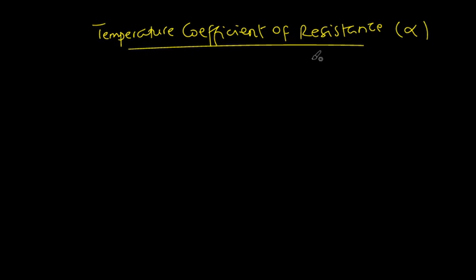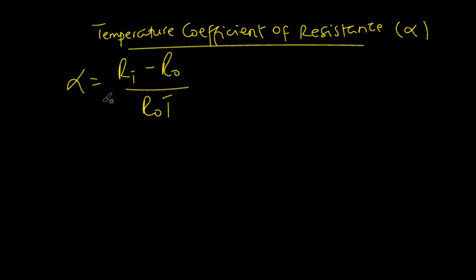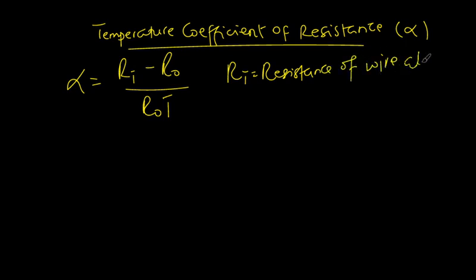The symbol is alpha, as I said. Mathematically, the temperature coefficient of resistance is given by: alpha equals R_t minus R₀, all over R₀ times t. Now, alpha is the temperature coefficient of resistance, and R_t is the resistance of the wire at the temperature t.